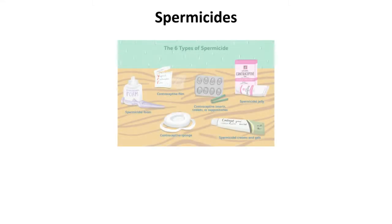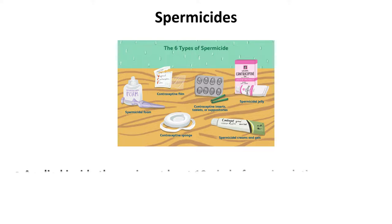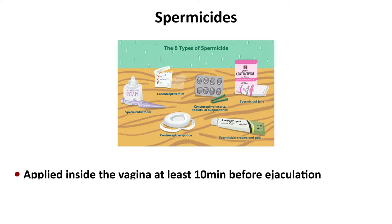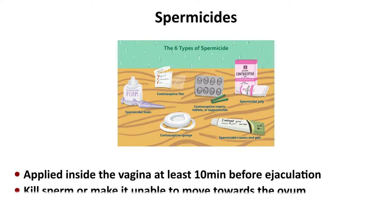Another barrier method is spermicides, which are available as foaming tablets, suppositories, jellies, and cream. Spermicides are applied inside the vagina at least 10 minutes before ejaculation. They kill sperm or make them unable to move towards the ovum.